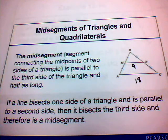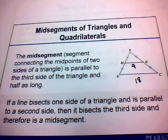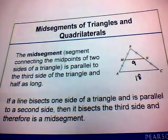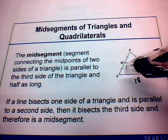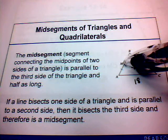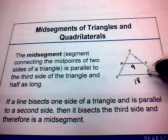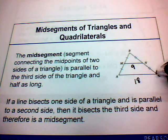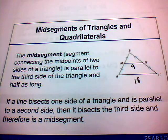The mid-segment is always one-half the length of the third side and always parallel to the third side. Also, if a line bisects one side of a triangle and is parallel to the second side, then it bisects the third side and is therefore a mid-segment.